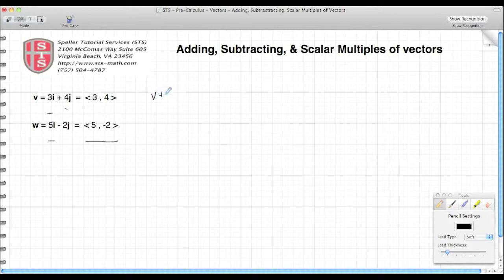Let's begin by finding the sum of these two vectors. We're going to add the horizontal components, which would be 3i plus 5i, and then we're going to add the vertical components, 4j minus 2j. All right, 3 plus 5 gives me 8i, and 4 minus 2 gives me 2j. So vector V plus vector W is 8i plus 2j.